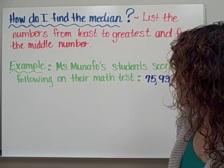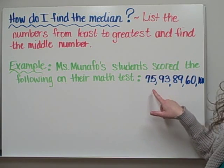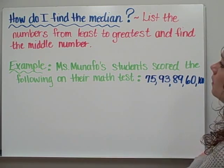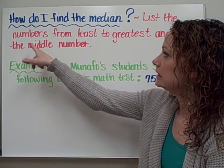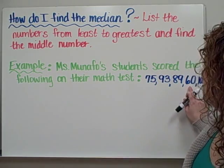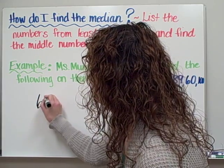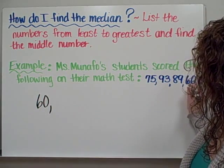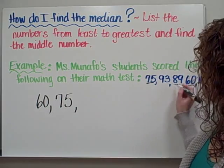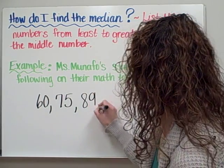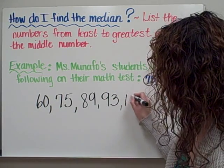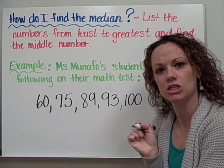Ms. Manafo's students scored the following on their math test: 75, 93, 89, 60, and 100. I'm going to follow my steps and list those numbers from least to greatest first. My lowest number would be 60, the next lowest would be 75, after that comes 89, 93, and finally my high-scoring student who scored a perfect 100 on their test.